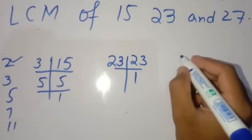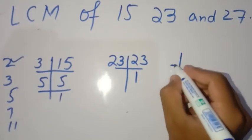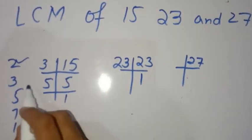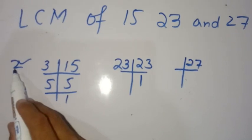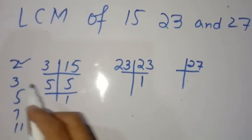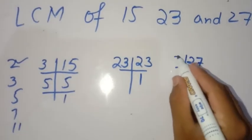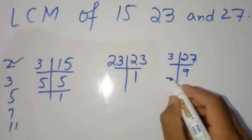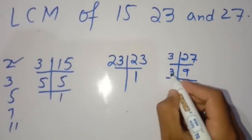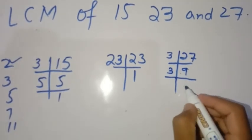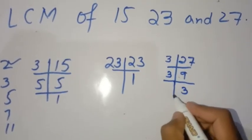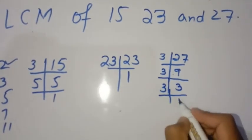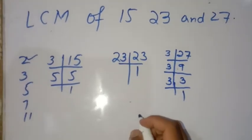Then we find the prime factors of 27. 2 does not divide 27. 3 divides 27 — 3 times 9 is 27. Then 3 divides 9 — 3 times 3 is 9. And 3 divides 3 — 3 times 1 is 3. So the prime factors of 27 are 3, 3, and 3.